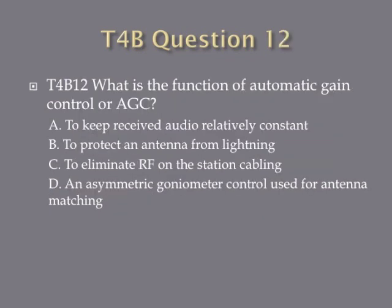Question 12. What is the function of automatic gain control, or AGC? A. To keep received audio relatively constant. B. To protect an antenna from lightning. C. To eliminate RF on the station cabling. D. An asymmetric goniometer control used for antenna matching.